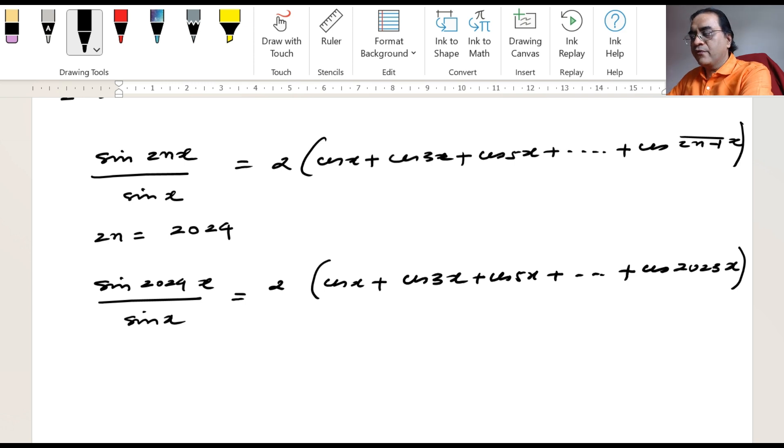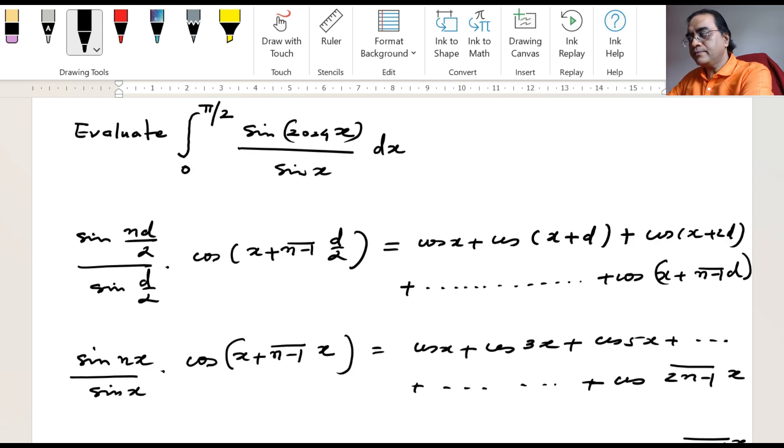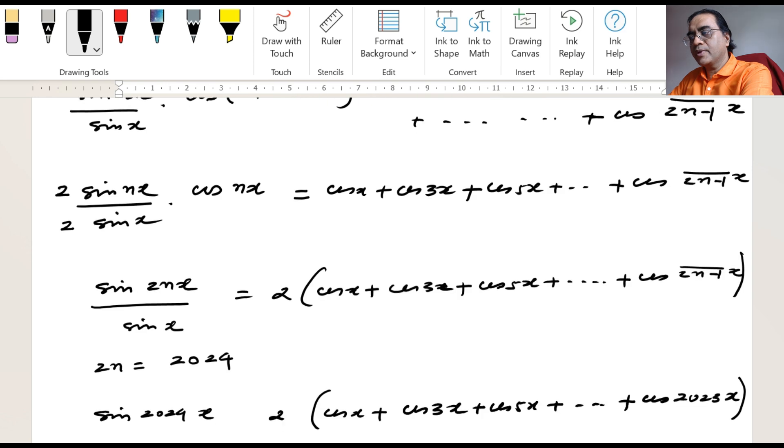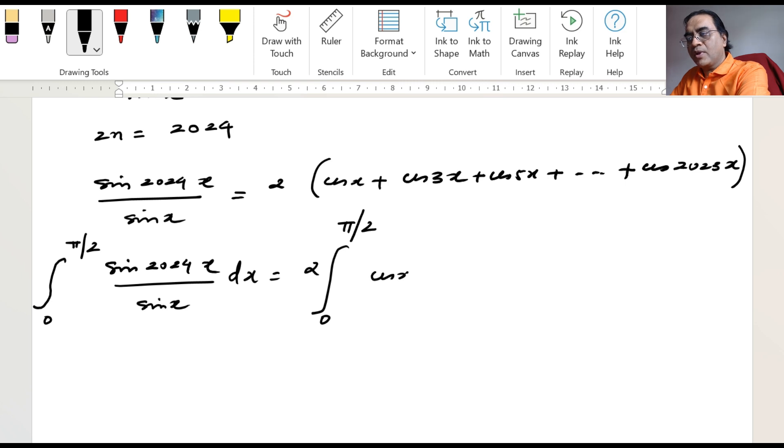Now we can integrate from 0 to pi by 2. So we have got integral 0 to pi by 2, sin 2024x divided by sin x dx, equal to 2 times integral 0 to pi by 2, cos x, cos 3x, cos 5x, and so on up to cos 2023x.